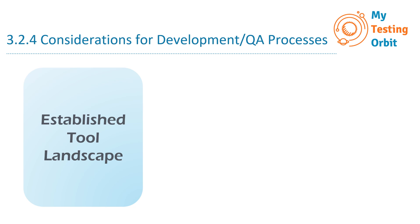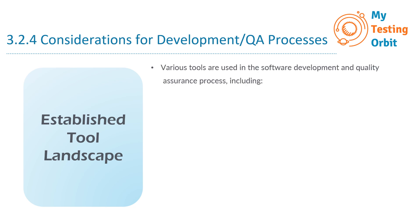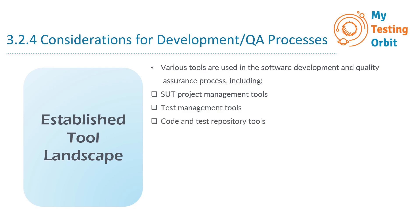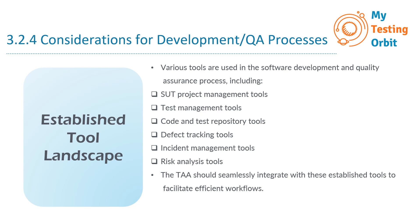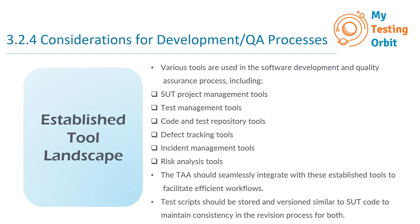Let's now discuss the importance of the established tool landscape and integration within your test automation architecture. Various tools are used in the software development and quality assurance process, including SUT project management tools, test management tools, code and test repository tools, defect tracking tools, incident management tools, and risk analysis tools. The TAA should seamlessly integrate with these established tools to facilitate efficient workflows.